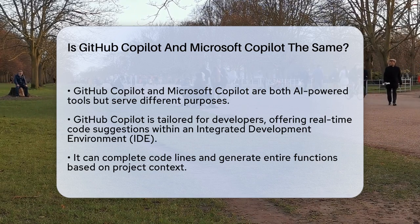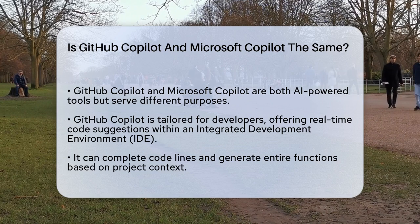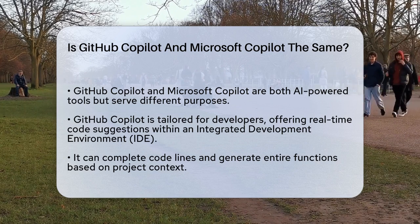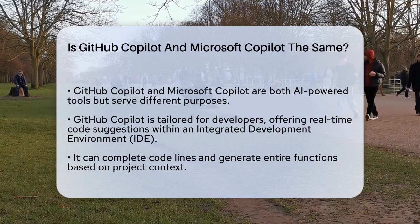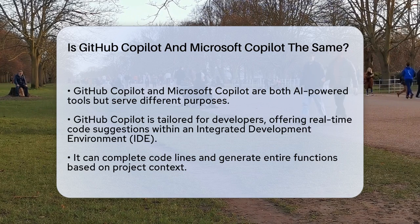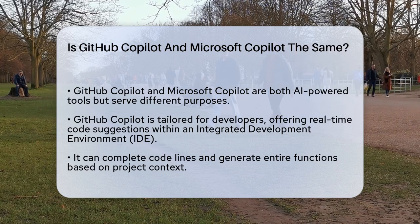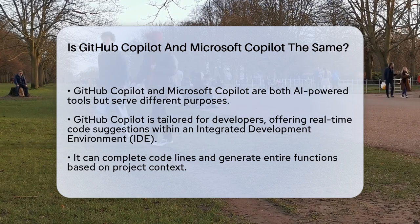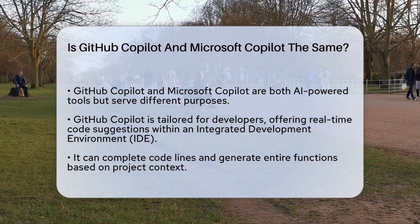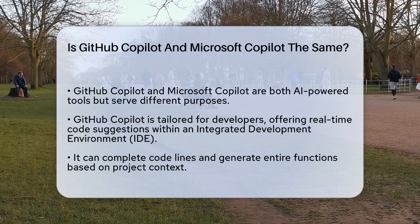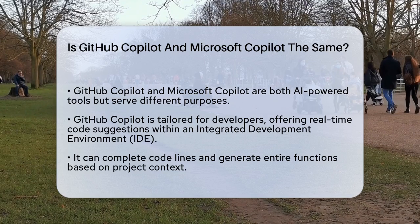GitHub Copilot is specifically designed for developers. It works within your integrated development environment, or IDE, to provide real-time code suggestions, complete code lines, and even generate entire functions based on the context of your project.